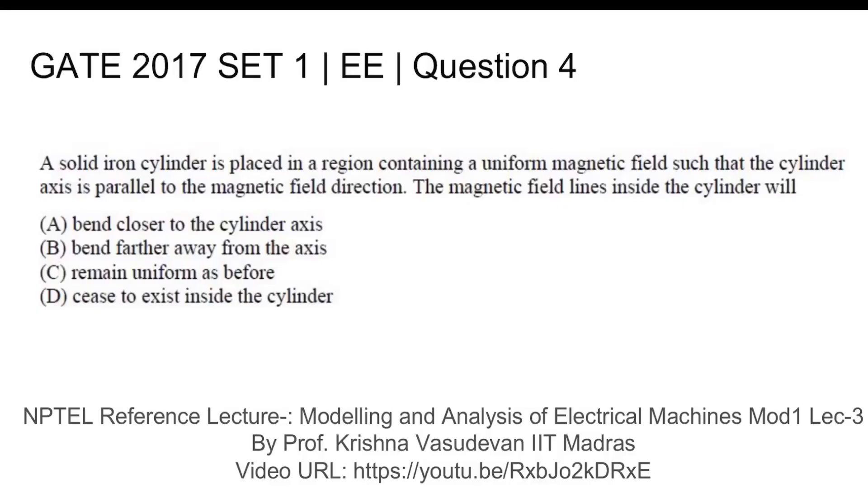This is GATE 2017 set one electrical question number four. It says a solid iron cylinder is placed in a region containing a uniform magnetic field such that the cylinder axis is parallel to the magnetic field direction. The magnetic field lines inside the cylinder will: bend closer to the cylinder axis, bend further away from the axis, remain uniform, or cease to exist inside the cylinder.